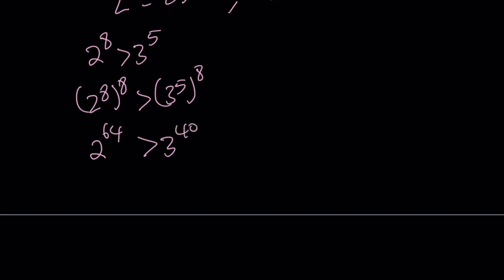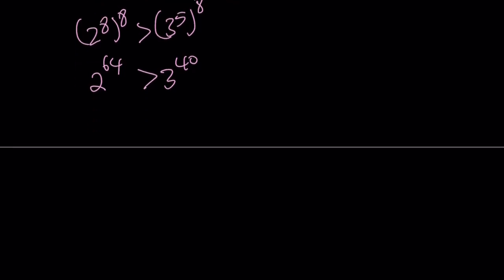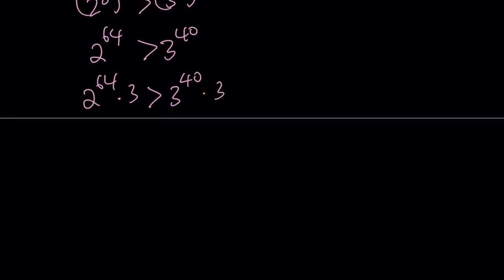Now you might be asking, I didn't get to 2 to the power 70, nor did I get 3 to the power 41. But don't worry, this is as close as we can get and then I'm going to adjust it. I want to get 3 to the power 41, so it would make sense to multiply both sides by 3. Let's go ahead and multiply both sides by 3 — that obviously does not change the inequality. This gives us something interesting: 2 to the power 64 times 3 is greater than 3 to the power 41.